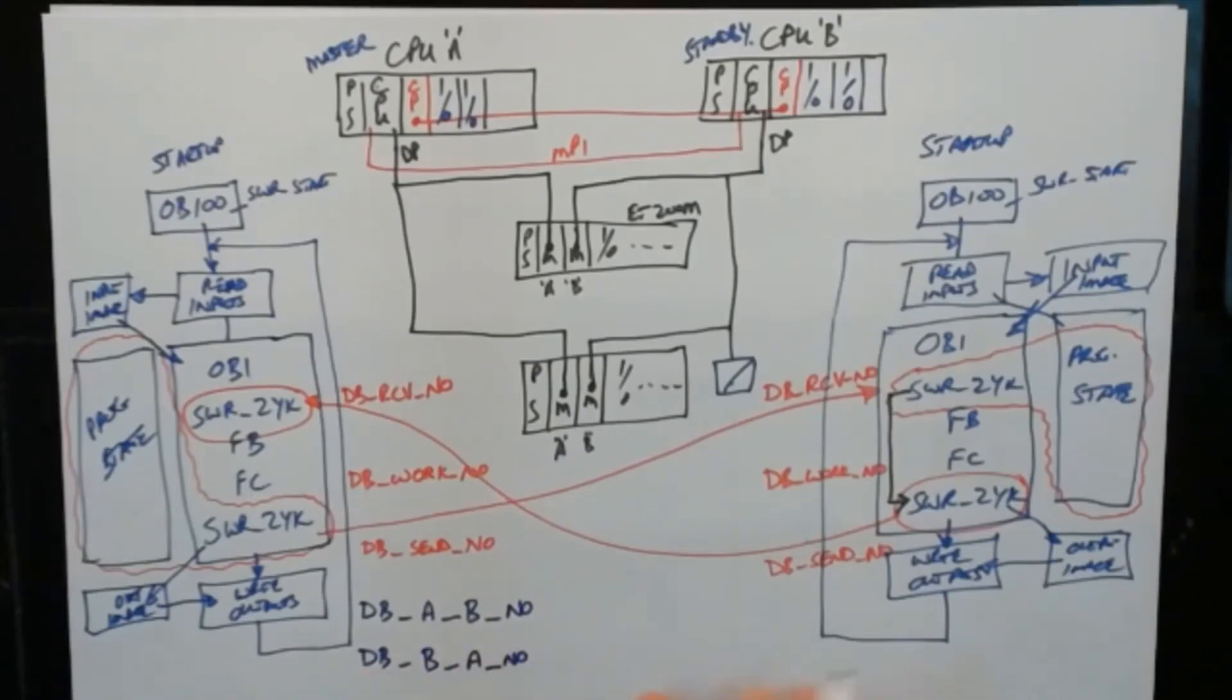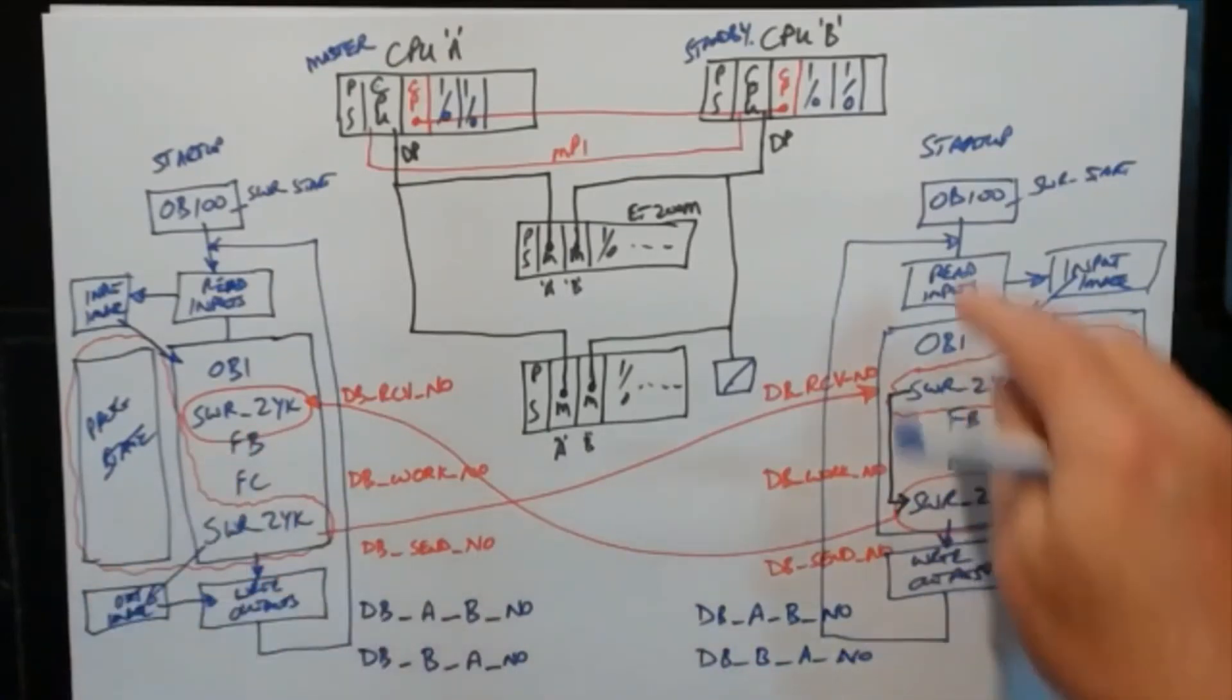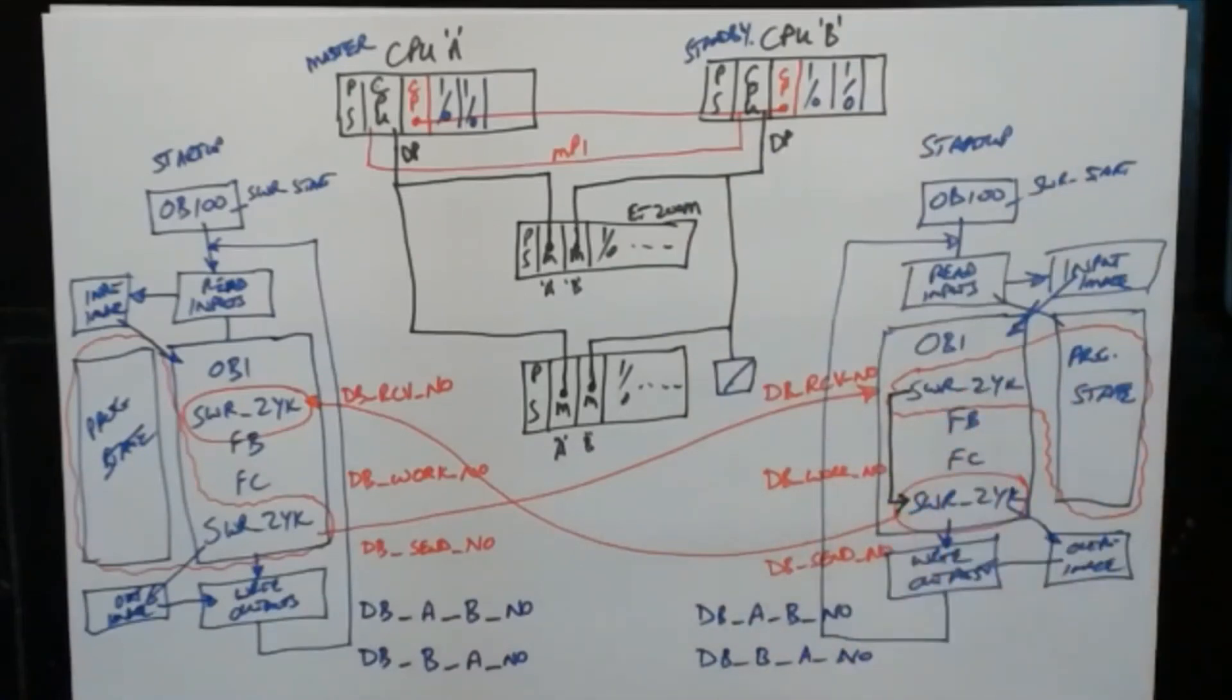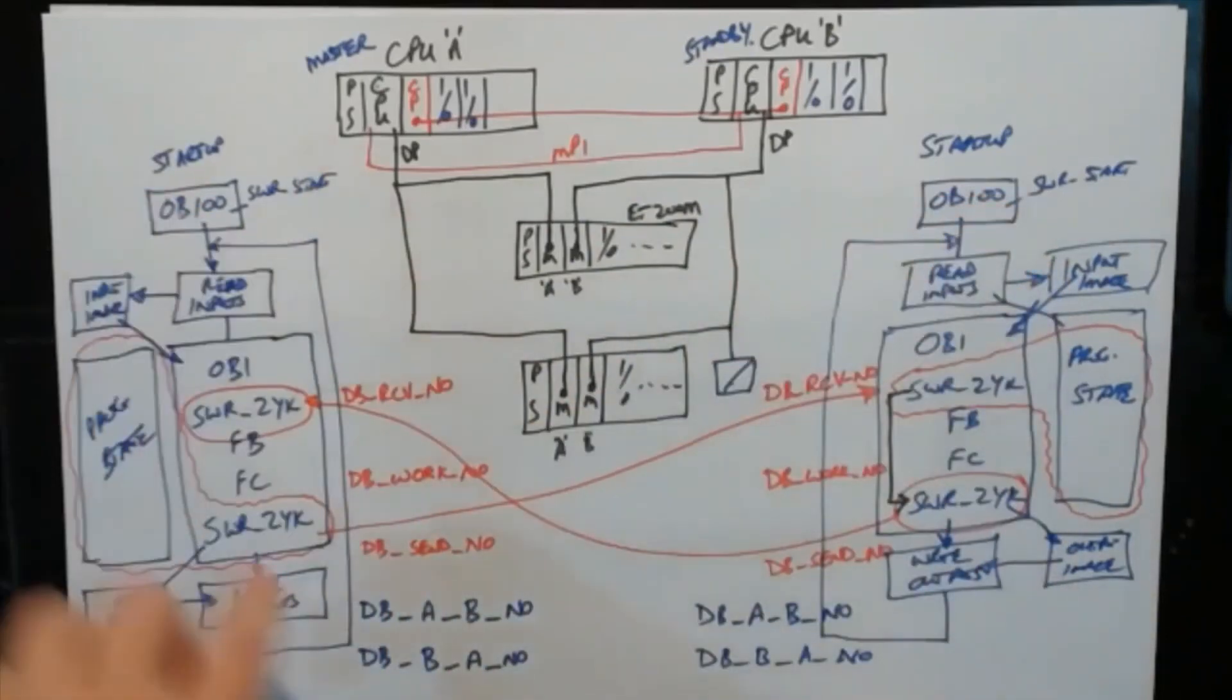In this CPU, the same DBs, we've got a DB_A_TO_B_NO, and a DB_B_TO_A_NO. This DB should carry all the information that this CPU needs to tell that CPU about the state of its own non-redundant program. And this DB needs to have all the information that this CPU needs to tell that CPU about its state of its non-redundant program.